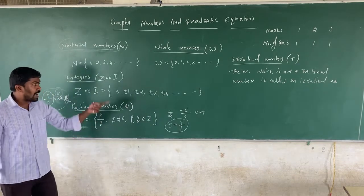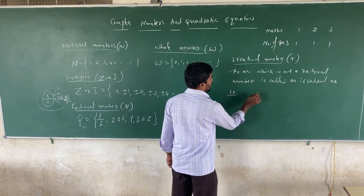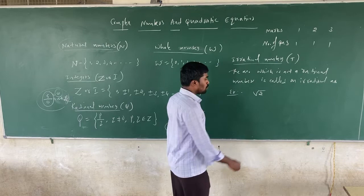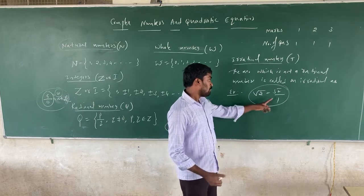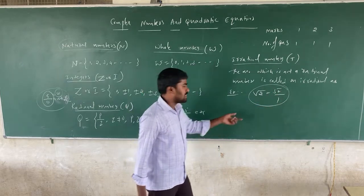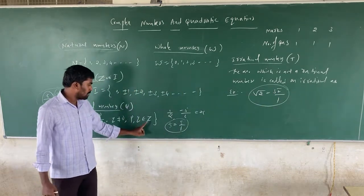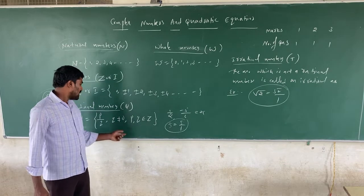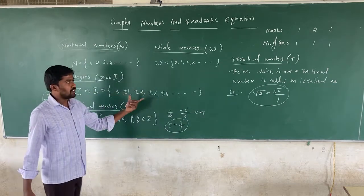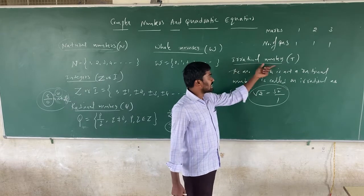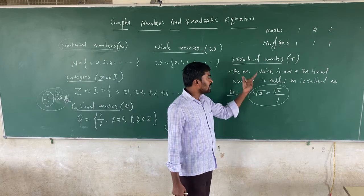For example, root 2. Root 2 looks like it could be in P by Q form, but here the condition is that both P and Q must be integers only. Root 2 is not an integer, so root 2 is an irrational number — it is not a rational number. Similarly, root 3, root 5, etc. are irrational numbers.